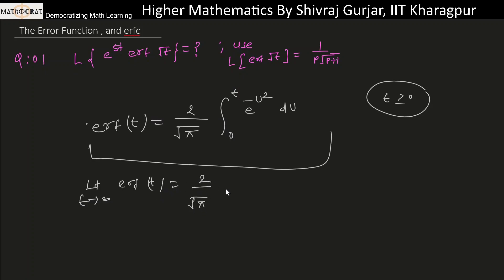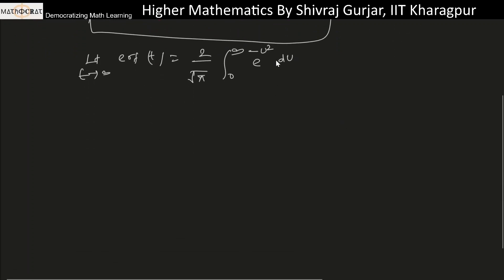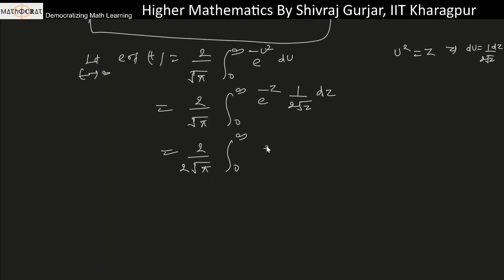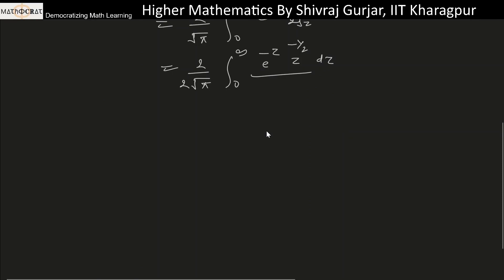We get two by root pi times the integral from zero to infinity of e to the power minus u squared du. Using the substitution u squared equals z, du becomes one over two root z dz. So we can write two by root pi times the integral from zero to infinity of e to the power minus z times one over two root z dz.